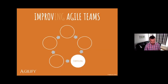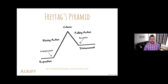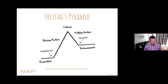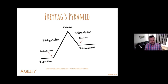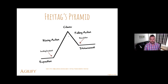Moving on to storytelling. This is called Freytag's Pyramid — a theory based on a 19th century German playwright called Gustav Freytag, in which he describes the seven elements or phases that screenwriters can follow to create sympathy for a character on stage, in a film, or in a book. This is also known as the dramatic arc, which is probably the more common name for it.